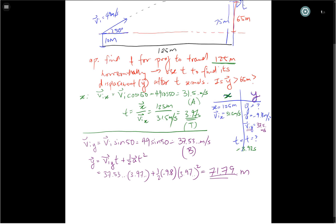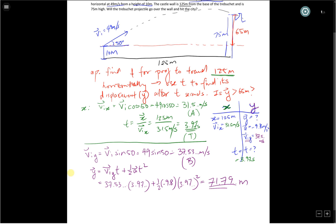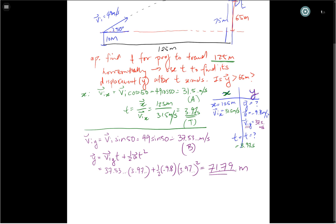You might be thinking, 71.79 meters is less than 75 meters. Therefore, it will probably not clear the castle wall. But be very careful. Remember, our trebuchet started 10 meters above the ground. It only needs a displacement of 65 meters in order to clear the castle wall. If we check our Y value that we calculated, this one is indeed greater than 65 meters, not 75 meters. Therefore, yes, it will clear the castle wall.